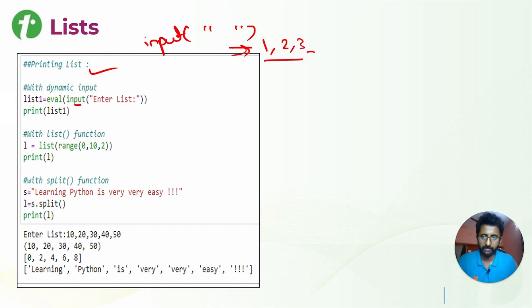Then we can use the eval function. We evaluate that input which will convert it into a list, and it should show all these elements I have entered, converted to 10, 20, 30, 40, 50.